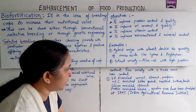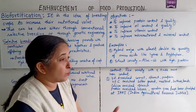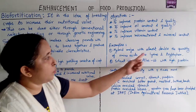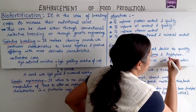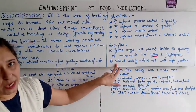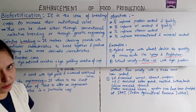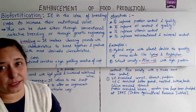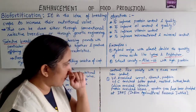Now there are a few examples of varieties developed through biofortification. Hybrid maize with almost double the quantity of amino acids like lysine and tryptophan. Wheat variety Atlas 66 with high protein content. A rice variety with five times more iron content. Vitamin A enriched carrot, spinach, and pumpkin.